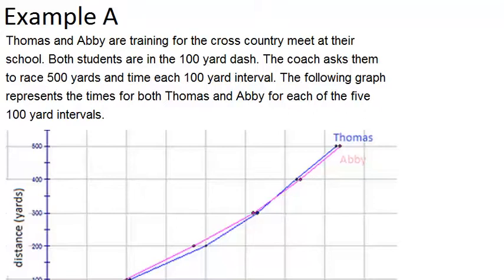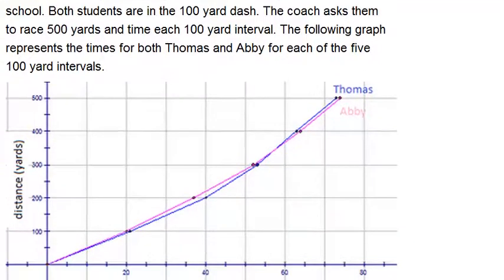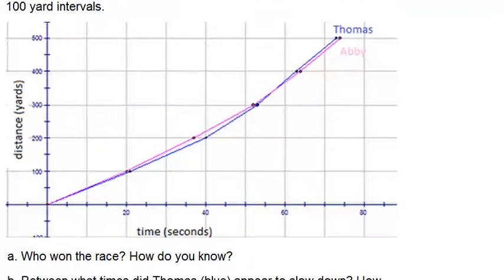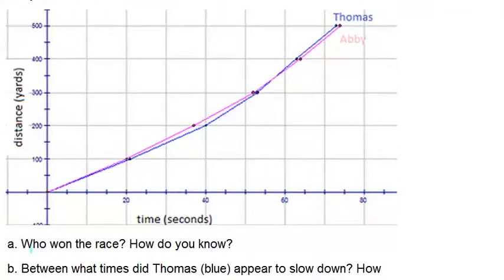The following graph represents the times for both Thomas and Abby for each of the five 100-yard intervals. And we can see our graph right here. Now we're going to have some questions. Part A, who won the race and how do you know?